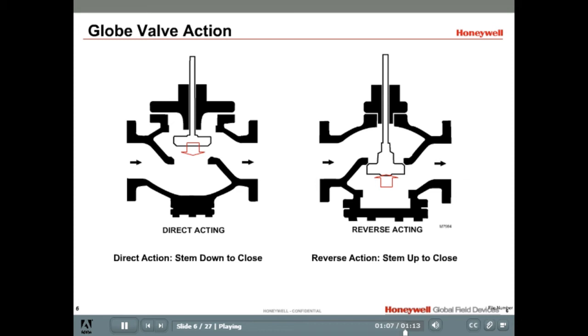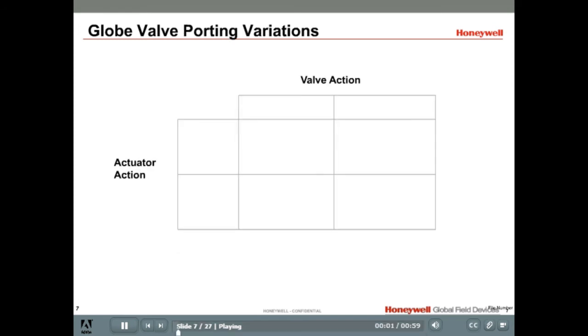Let's take a look now at how we configure the normal position based on the valve and actuator. When using a direct-acting valve with a direct-acting actuator that is fail-safe closed, the valve becomes normally open. A reverse-acting valve with a direct-acting actuator will make the valve normally closed. A reverse-acting actuator and a direct-acting valve will make the valve normally closed. And a reverse-acting actuator with a reverse-acting valve will make the valve normally open.